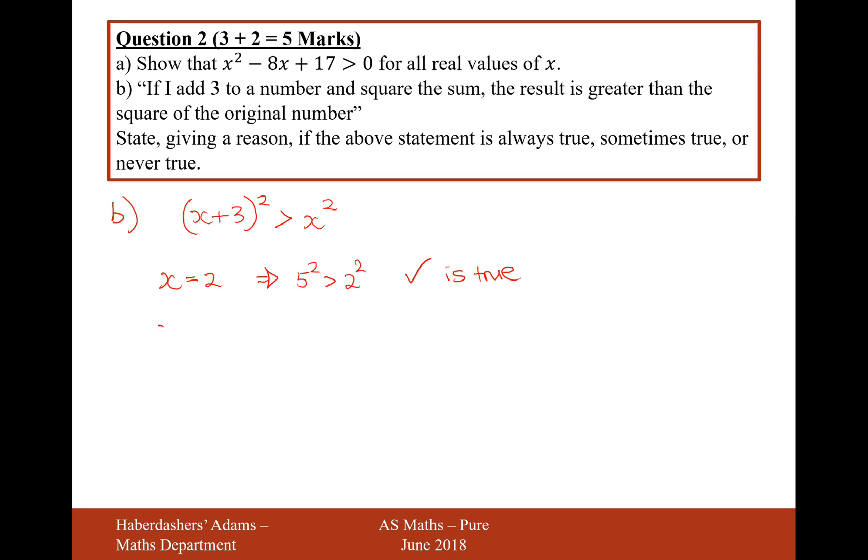But maybe if I set x equal to minus 10, let's just see what happens here. That will be minus 10 plus 3, that will be minus 7 squared. It's supposed to be bigger than minus 10 squared, which is not true. Because 49 is not bigger than 100. So therefore, it's only sometimes true.